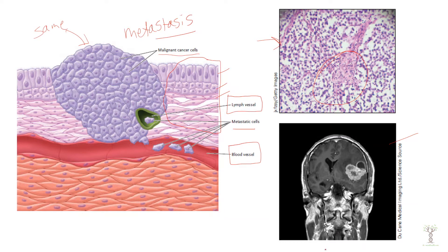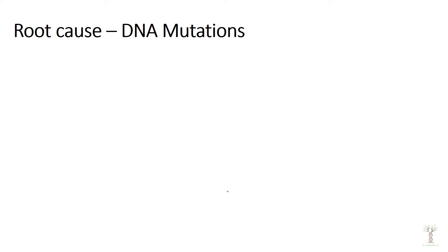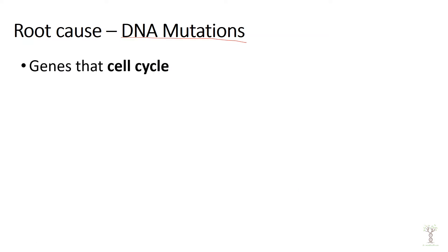So why do tumors form? Why would these cells suddenly form a mass? The root cause of cancer is DNA mutations. We have all kinds of different genes that regulate multiple things, for example genes that regulate the cell cycle. We have genes that increase or decrease the rate that cells reproduce based on need — if the tissue is growing, if we have injuries to repair, the cell cycle should be regulated.